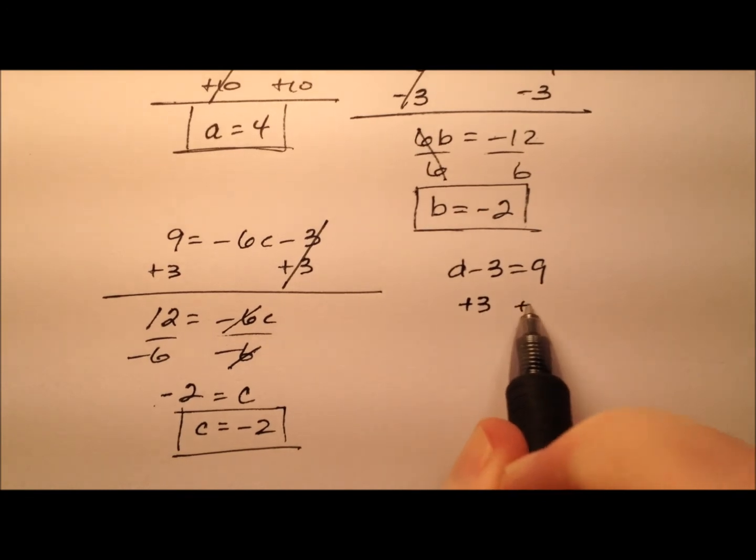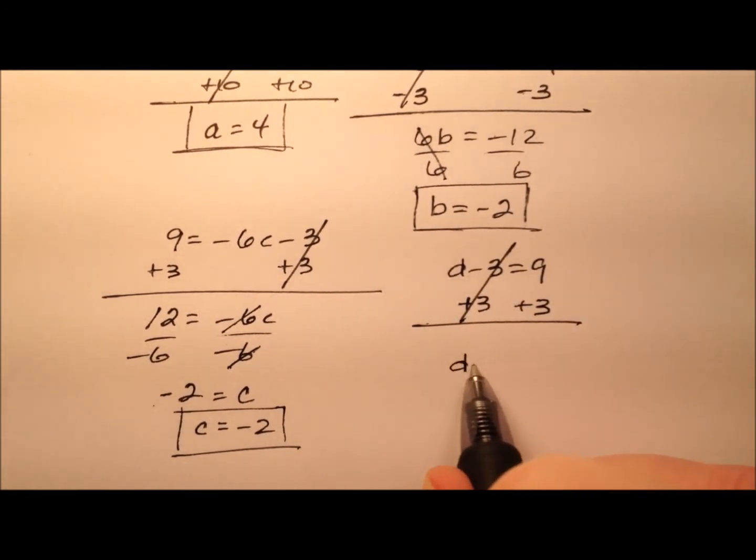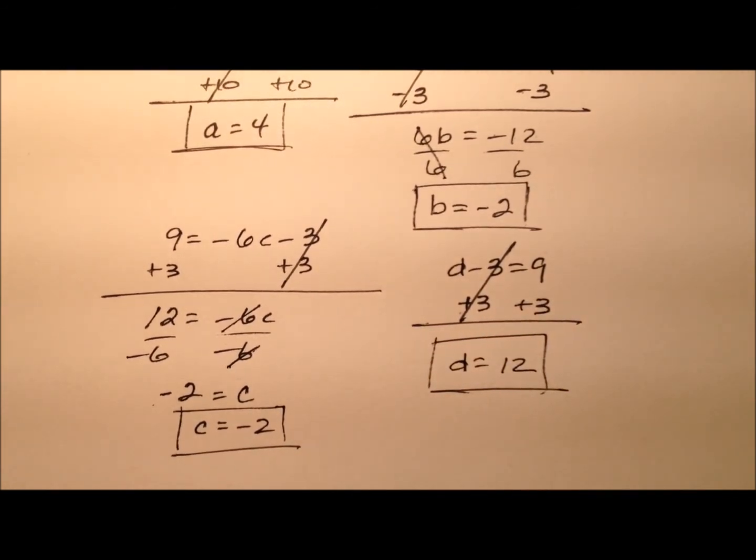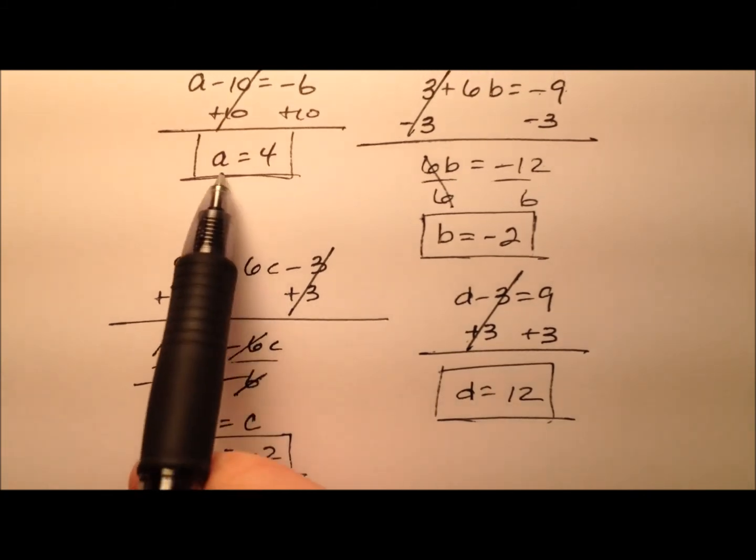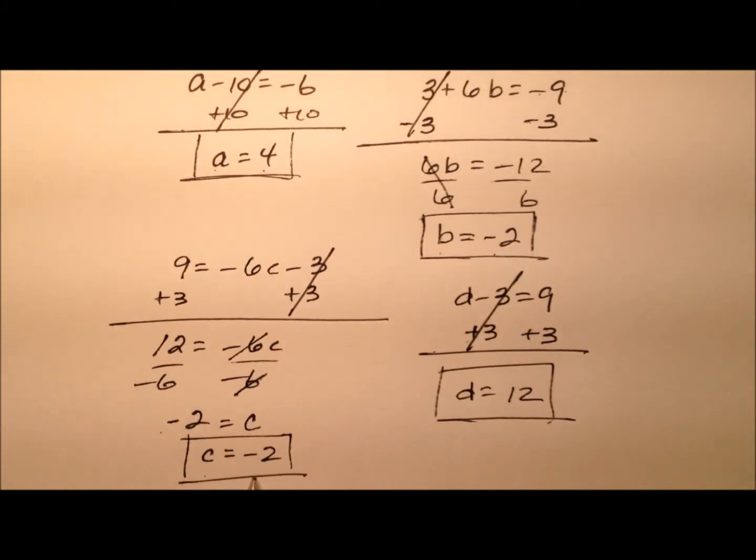And finally, let's get this D isolated and solve this equation. So D equals 12, 9 plus 3. So the four values that we have: A equals 4, B equals negative 2, C equals negative 2, and D equals 12.